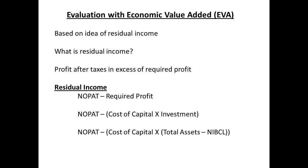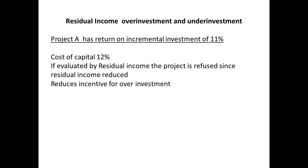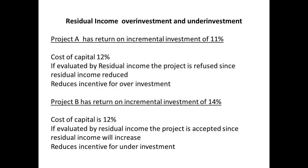We know that the investment figure is equal to the total assets less non-interest-bearing current liabilities. Now we have a measure for residual income. Consider two possible projects. In the first, the return on incremental investment is 11%, but the cost of capital is 12%. Residual income analysis will refuse the project since the residual income is reduced — this will reduce the temptation for overinvestment. Project B has a return on incremental investment of 14%, with the cost of capital at 12%. Residual income would increase, so this reduces the temptation for underinvestment.